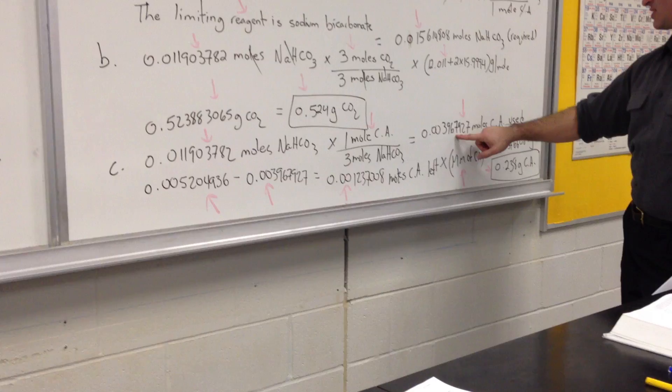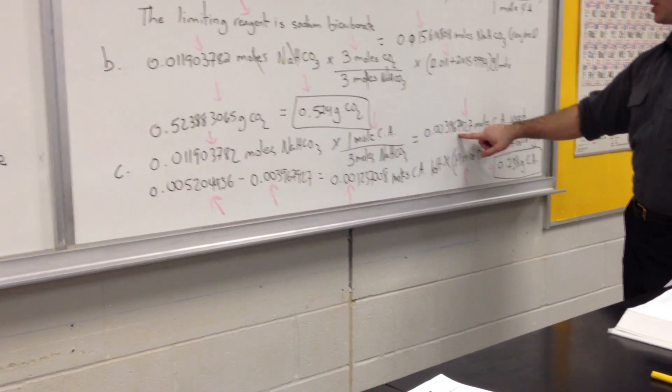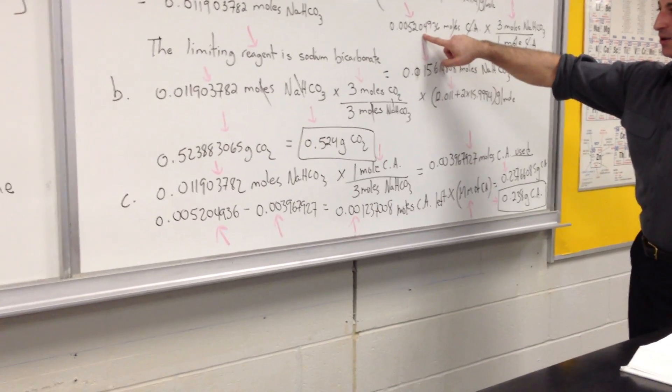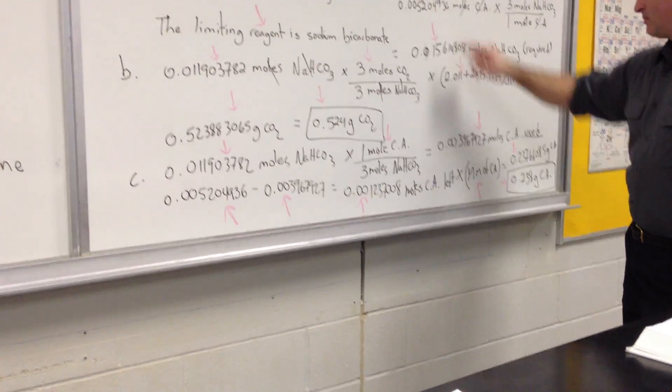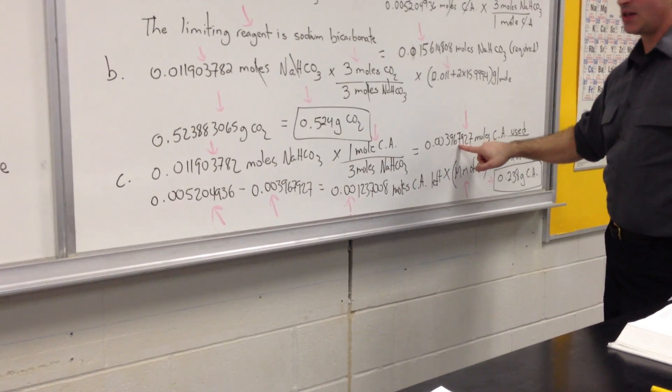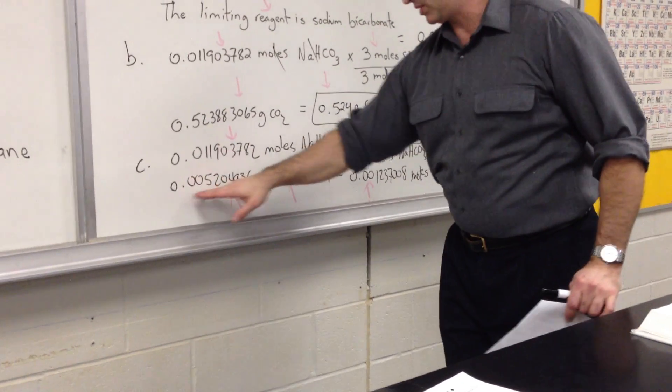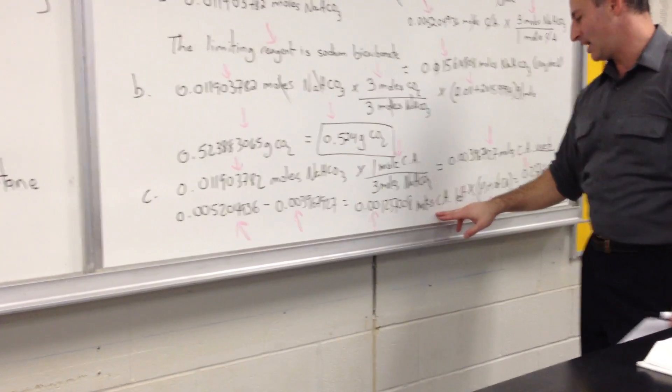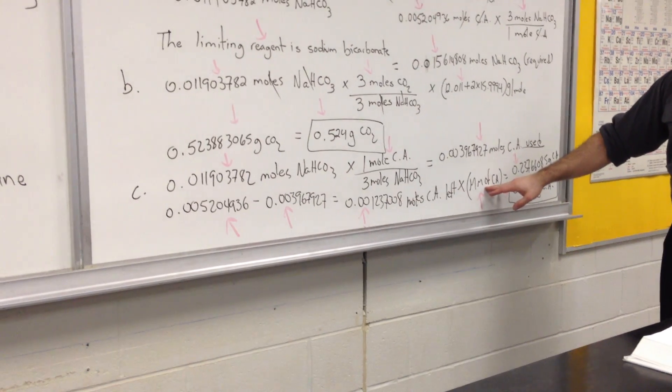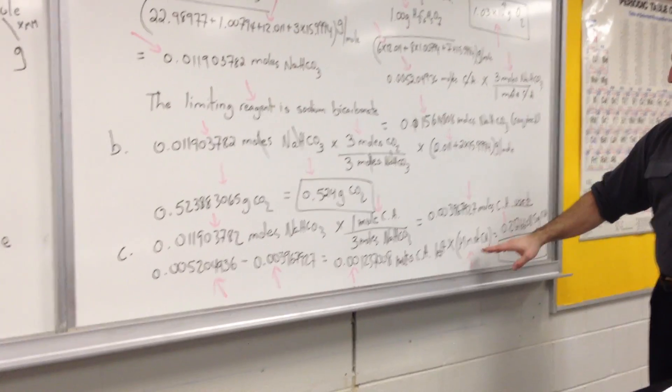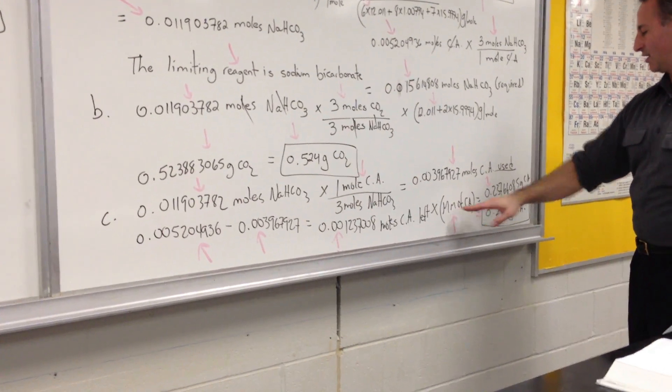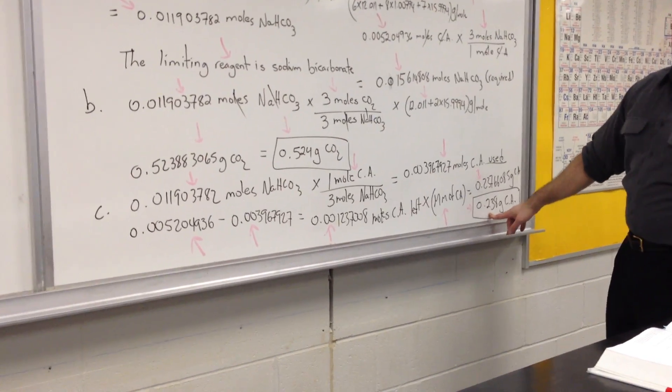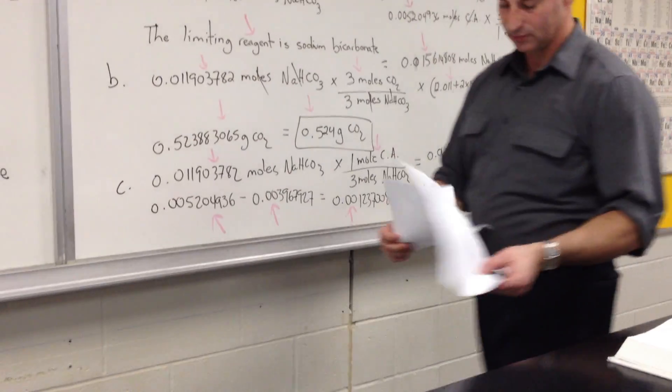How much citric acid do we have to begin with? This much. We already calculated it earlier. So this number minus that number will give us how much is left over in moles, and that's what we did here. So we have 0.012 moles of citric acid left times the molar mass of citric acid, which was already calculated here. I didn't have room to write it in, so I just squeezed it in there. The final answer is 0.238 grams of citric acid. Have a good day. Thank you.